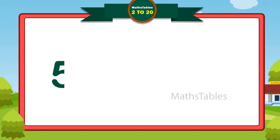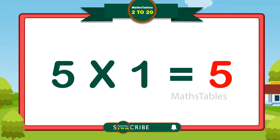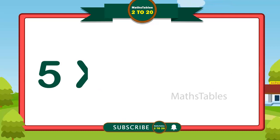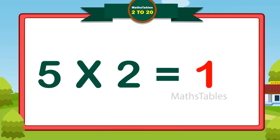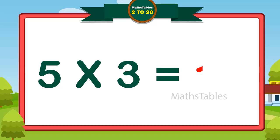Five ones are five. Five ones are five. Five twos are ten. Five twos are ten. Five threes are fifteen. Five threes are fifteen.